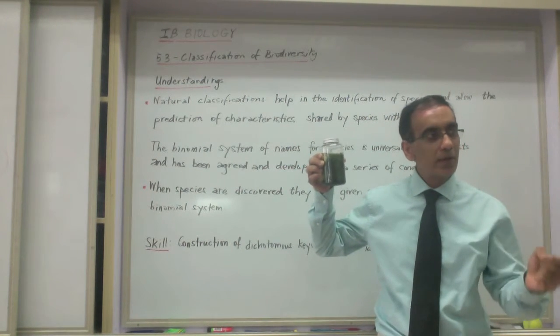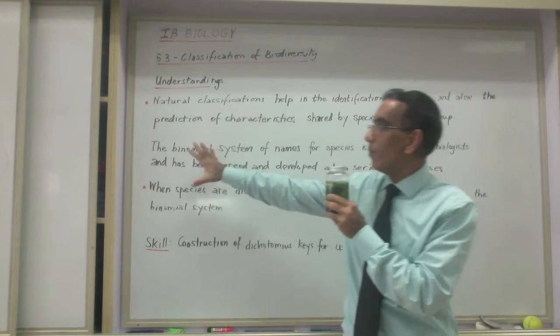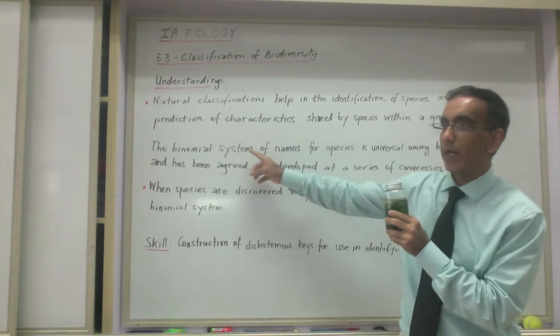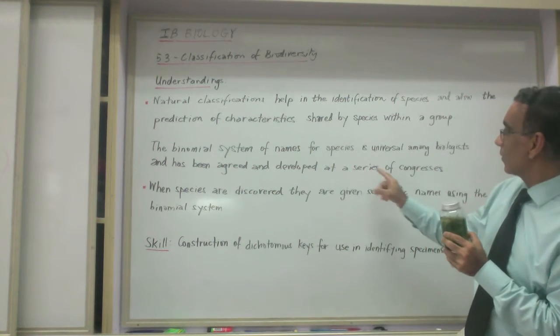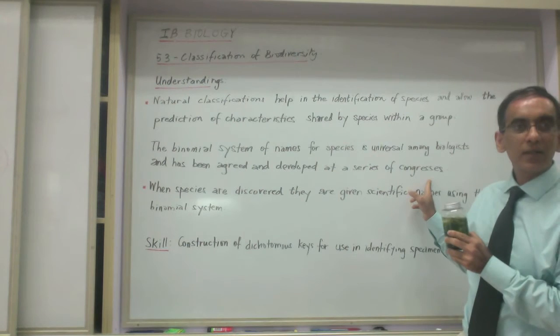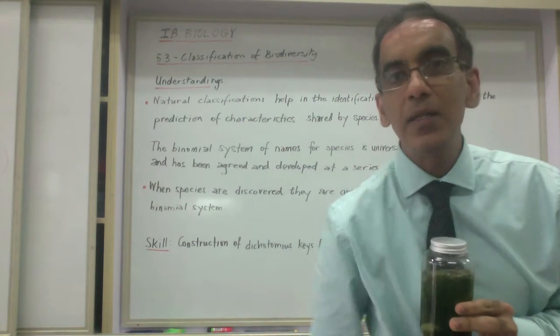But when we write in our report that we're speaking about Vigna radiata using the system of binomial nomenclature or the binomial system, which scientists have agreed upon using this system through a series of congresses. What's that, Timothy? Have you heard about a series of congresses? What do you think that means?